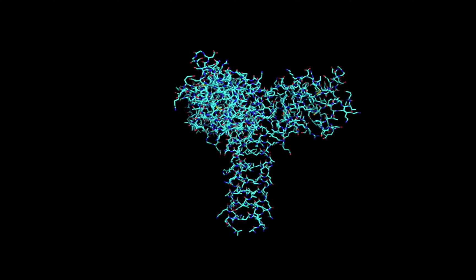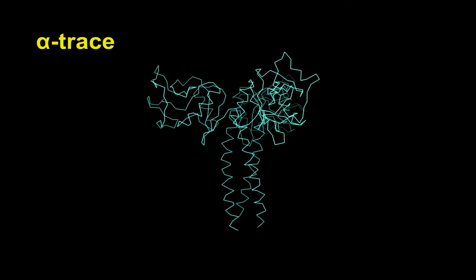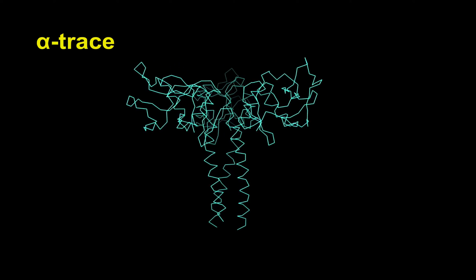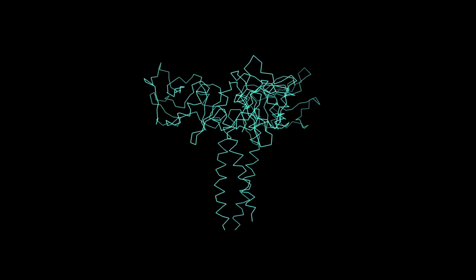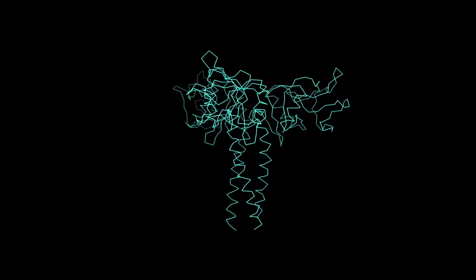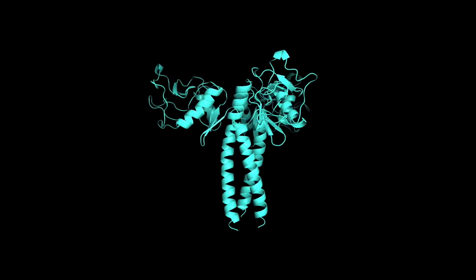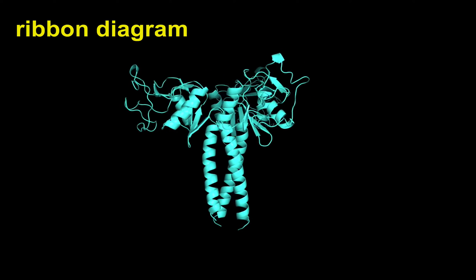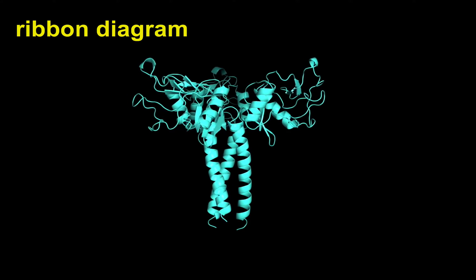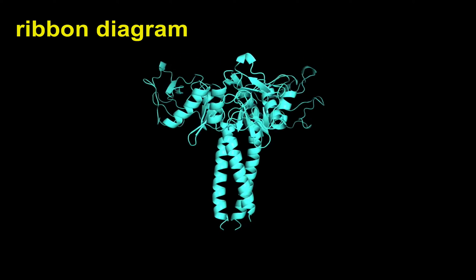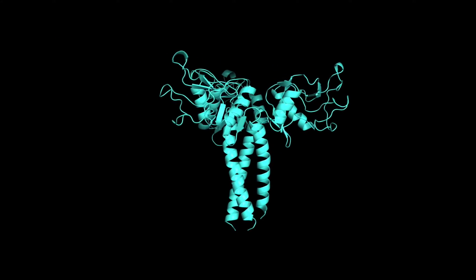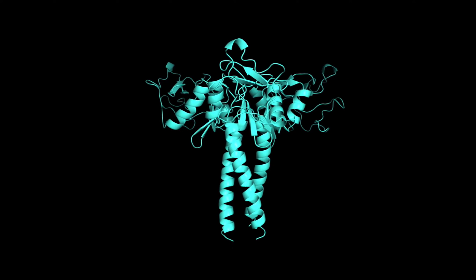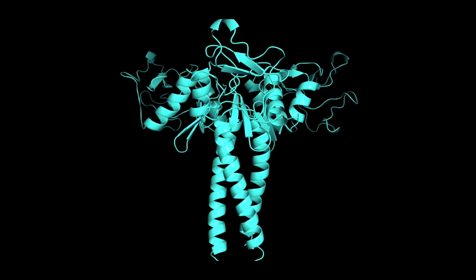We can simplify this a lot with a rendering called the alpha trace, which makes a line through the peptide bonds of the protein, ignoring side chains. The way that many proteins are rendered for textbooks and journal articles is the ribbon diagram. Though we're losing the detail of the side chain atoms, we're seeing the overall structure of the protein very easily, along with the alpha helices and beta sheets that make up the secondary structure.